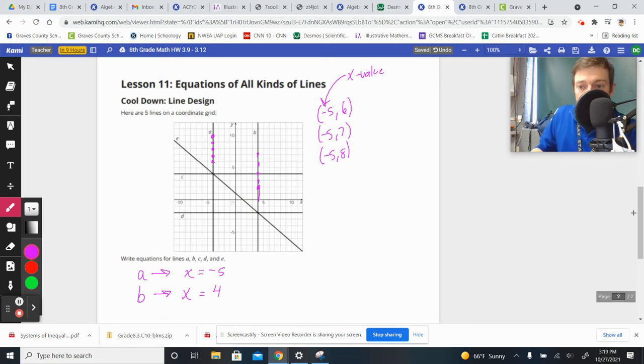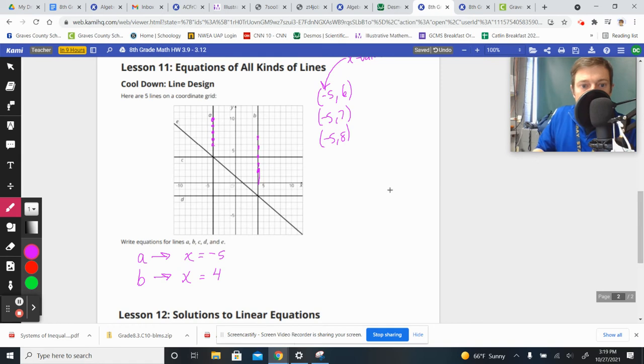And then if you have a horizontal line, like for example C and D, you'll notice for those they're horizontal and they don't cross the X axis. They cross the Y axis at a certain point. And the place where they cross the Y axis is the number of the equation that Y is equal to.